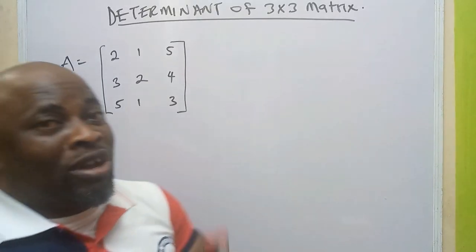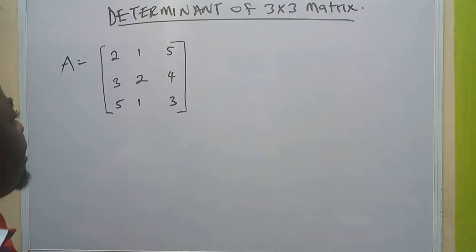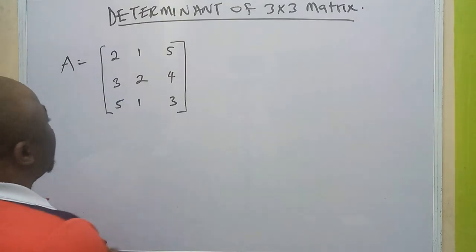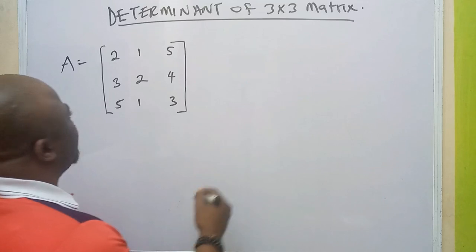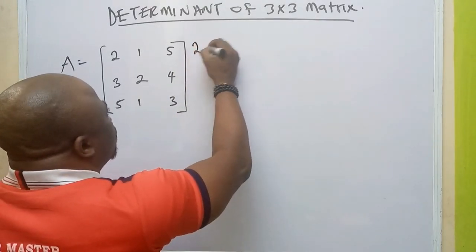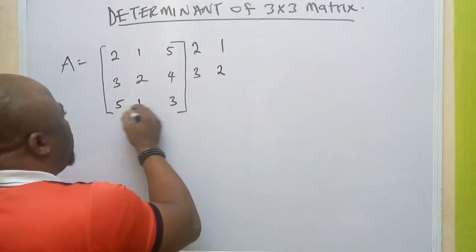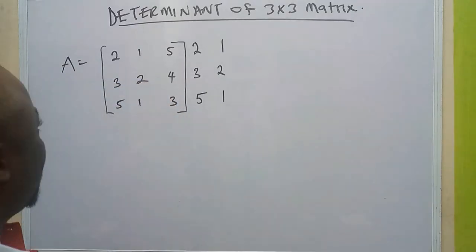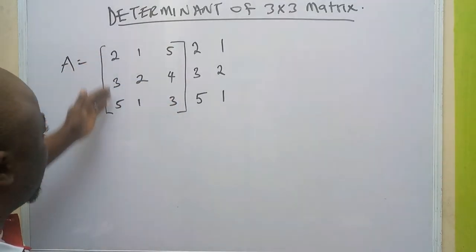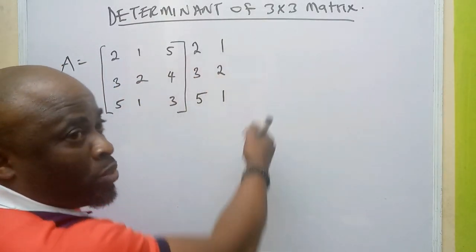What we are going to look at is how to find the determinant of this 3x3 matrix. For the first method, we are going to pick the elements in the first two columns of the matrix and bring them out. We bring out 2 and 1, then 3 and 2, then 5 and 1 — the first two columns repeated beside the matrix.